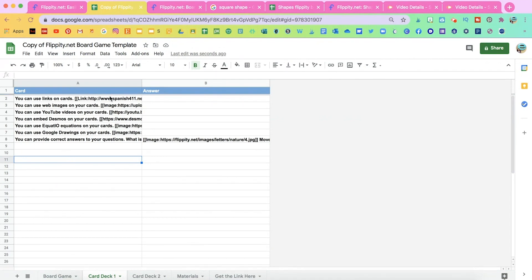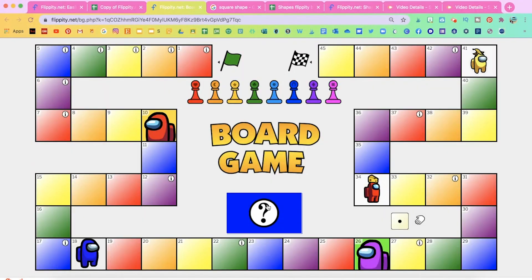And it'll show you here how you can add links. You can add web images, YouTube videos, anything you want. Google drawings and edit those card questions. It will pull them out randomly. So erase the ones you don't want to use and refresh your page. And it'll appear here.